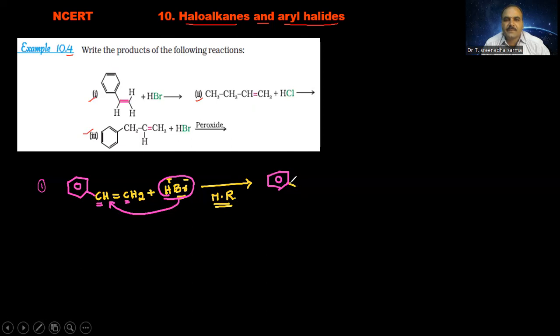So that changes to C6H5-CH-CH3, and the bromine is attached here, CH3. This one is the electrophilic addition reaction. According to Markovnikov's rule, the nucleophile is attached to less number of hydrogen atoms of carbon.